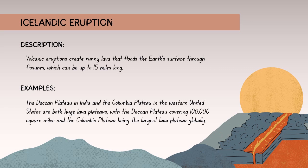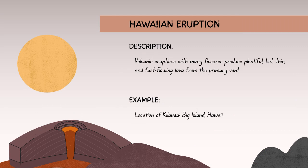While generally less explosive, Icelandic eruptions can pose hazards such as lava flows and ash fall. Notable examples include the Deccan Plateau in India and the Columbia Plateau in the western United States — both huge lava plateaus — with the Deccan covering around one lakh square miles and the Columbia Plateau being the largest lava plateau globally.